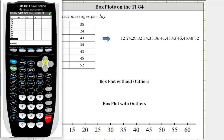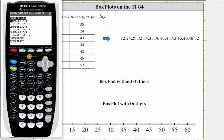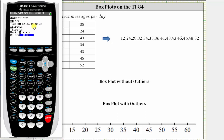Now that we have the data entered, we need to select the box plot tool. To do this, we press SECOND Y equals. We will use plot one, so we press ENTER. We need to turn this on — notice how the cursor is blinking on ON. If we press ENTER, the STAT plot is now on. Now we need to select the type of graph. The fourth option is the box plot that shows the outliers; the fifth option is the box plot that will not show the outliers. Let's first select the box plot that does not show the outliers, so we press down and arrow over to the fifth option and press ENTER.